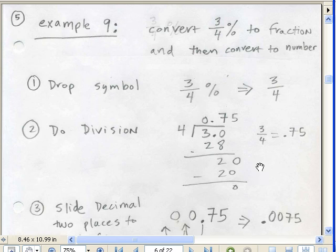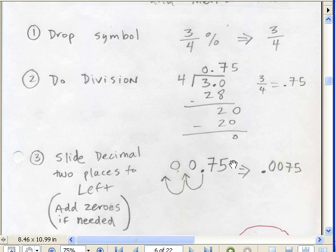We want to convert a fractional percent. You mean you can have a fractional percent? Yes, of course you can. Fractional percent and convert it to a number. First, we drop the symbol, get rid of that. We're left with 3 fourths. As we know, fractions are just division. So to get it to a decimal, we do the division. We end up with 0.75. Then we simply slide, since we're going from a percent to a number, we go to the left. Zip, zip, add those two zeros. And we're left with 0.0075.